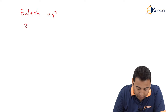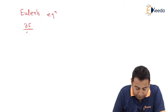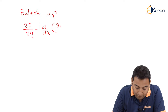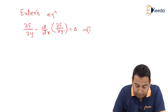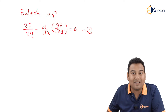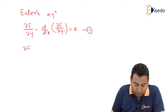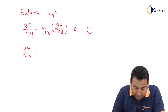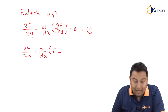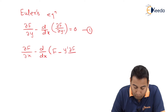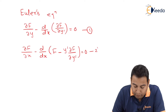Euler's equation number one is: ∂F/∂y − d/dx(∂F/∂y') = 0. We also have equation number two, which is another solution of the given integration: ∂F/∂x − d/dx(F − y'·∂F/∂y') = 0. These are the two Euler equations.